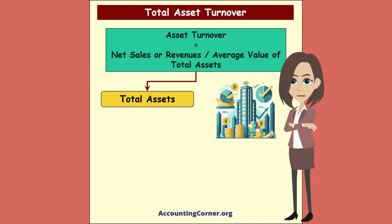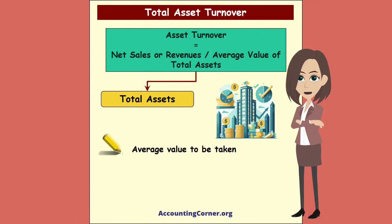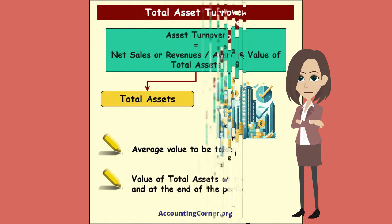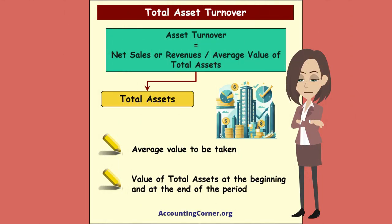Total Assets in this formula: the average value of total assets is to be taken. It is the value of total assets at the beginning and at the end of the period for which the ratio is calculated.